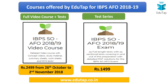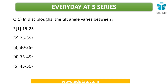Moving straight to the questions — the first question for today is: in disc plows, the tilt angle varies between what? When we talk about tillage as a topic, there are certain tillage implements used at various stages — primary tillage, secondary tillage, and intercultural operations. For each implement, there are certain important points to note. One of those is the tilt angle in disc plows.